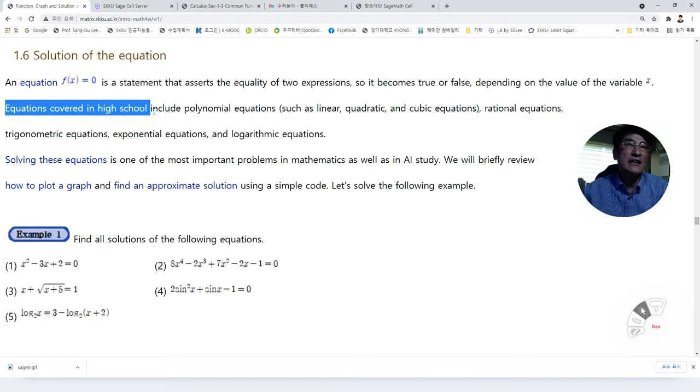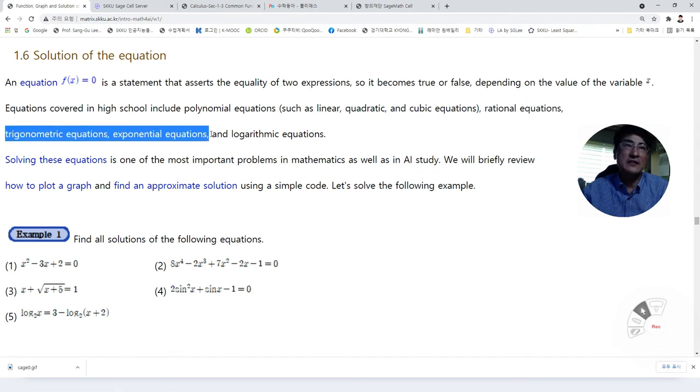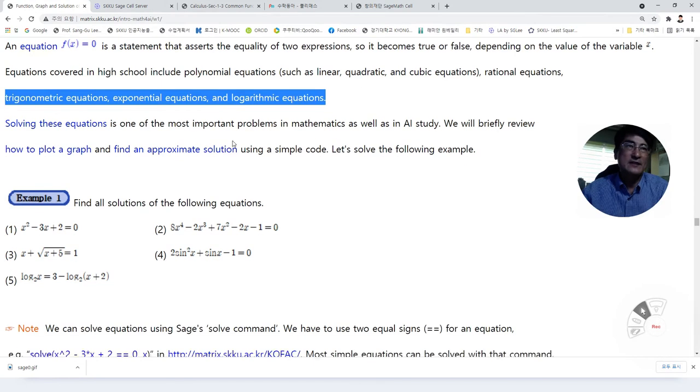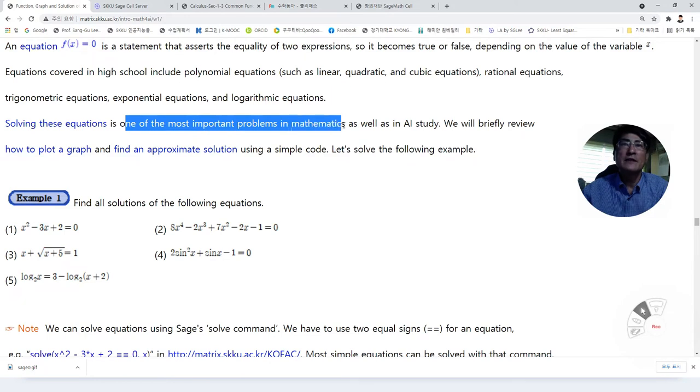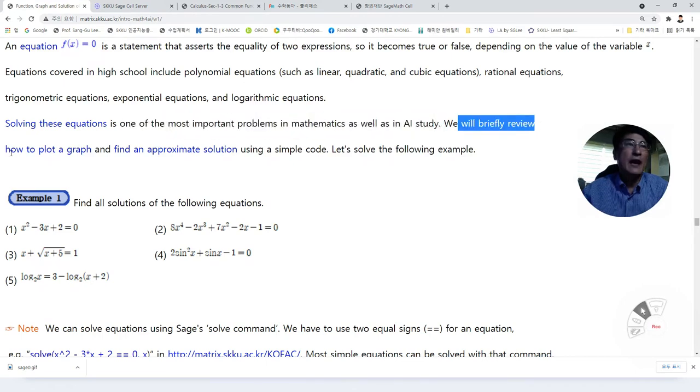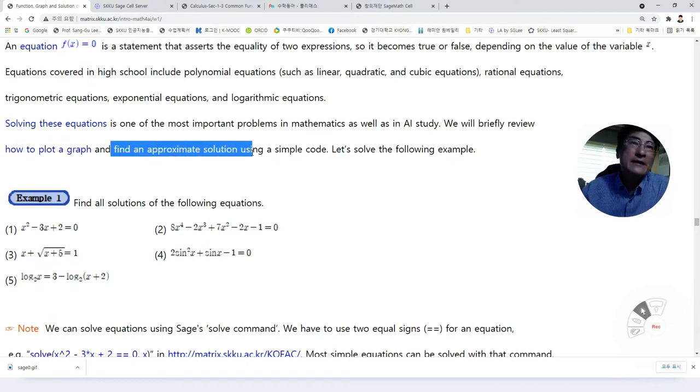An equation f of x equals zero is a statement that asserts the equality of two expressions, so it becomes true or false depending on the value of the variable x. Solving these equations is one of the most important problems in mathematics as well as in AI study. We will briefly review how to plot a graph and find an approximate solution using a simple code.